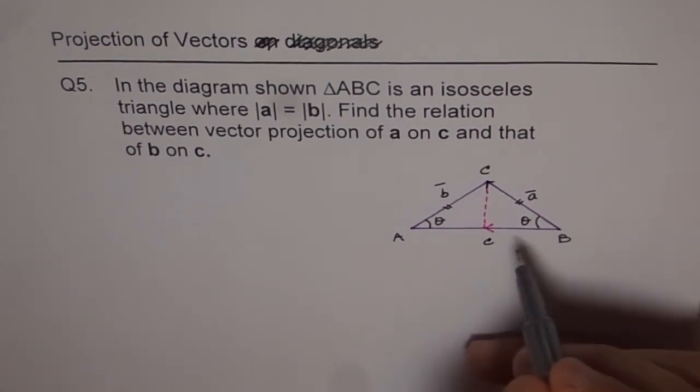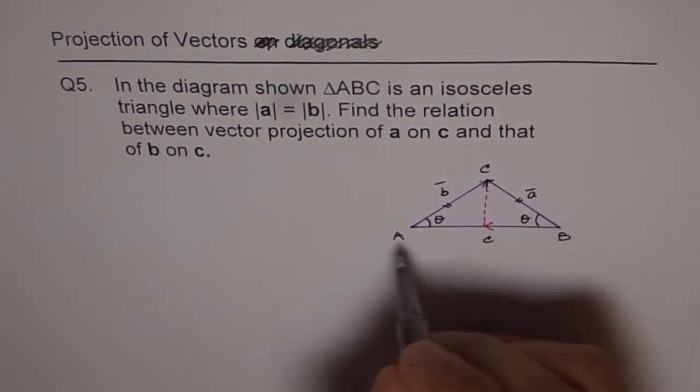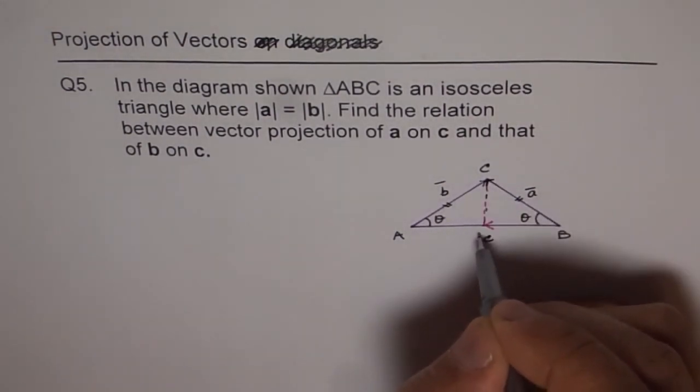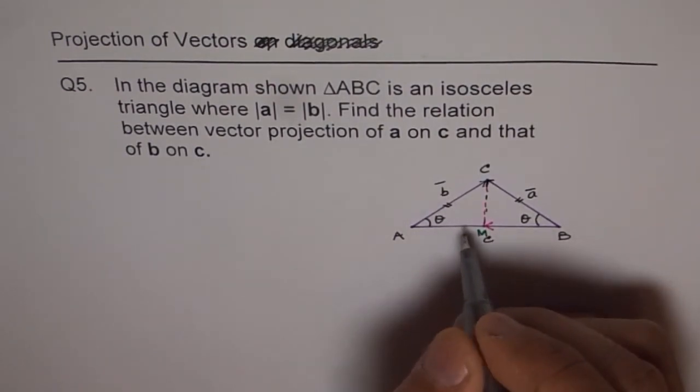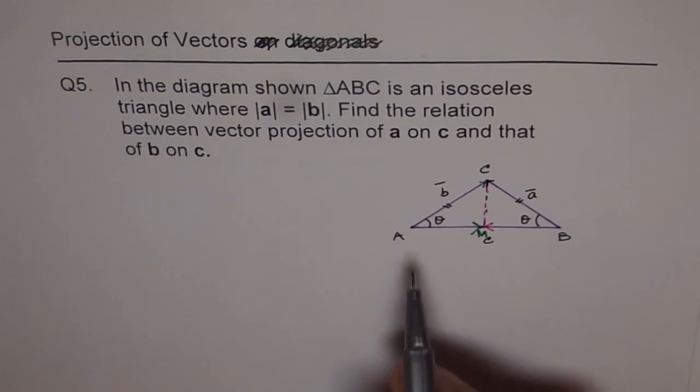And if I do vector projection of B, which is this vector, on C, which is this vector, then again I will come to the same point, let's say the middle point M, but the projection direction will be from A to M.